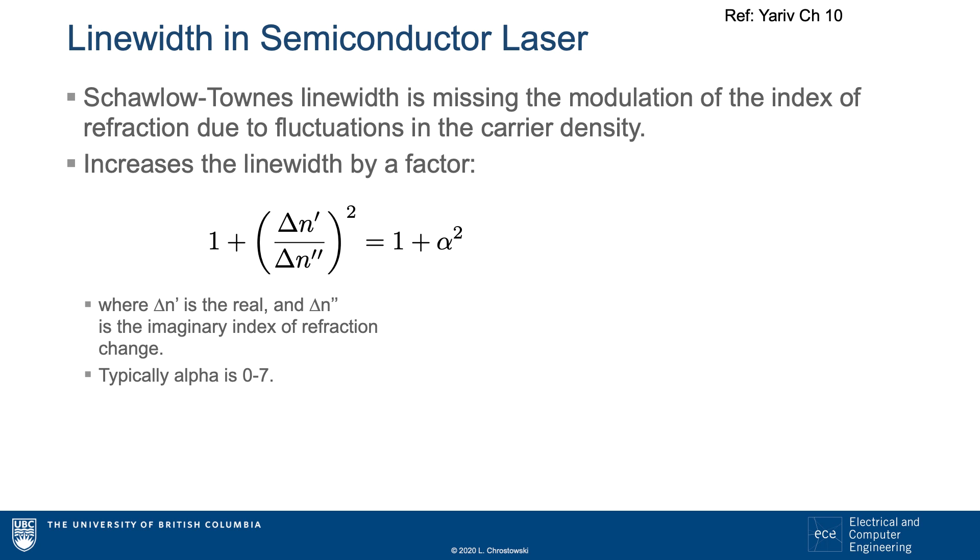An important point missing in this equation is that the index of refraction changes with the carrier density, so we have an additional effect where the laser cavity is being modulated by the noise, which leads to an additional spectral broadening, so the linewidth is multiplied by 1 plus alpha squared.